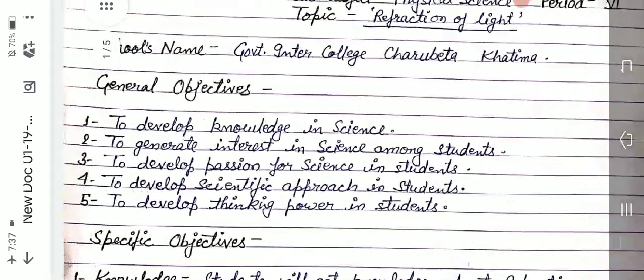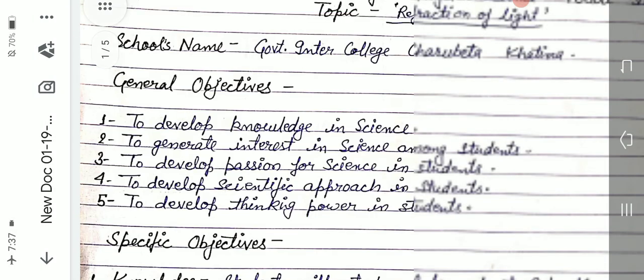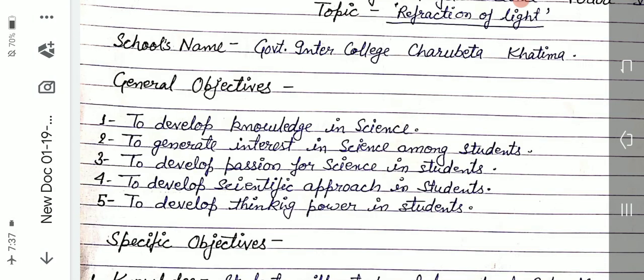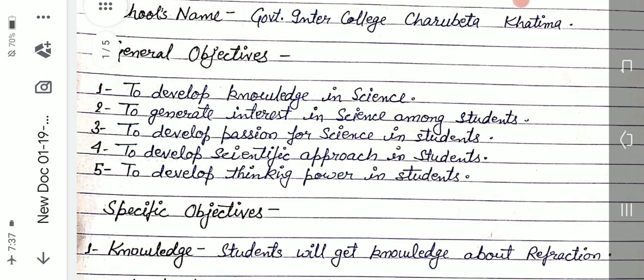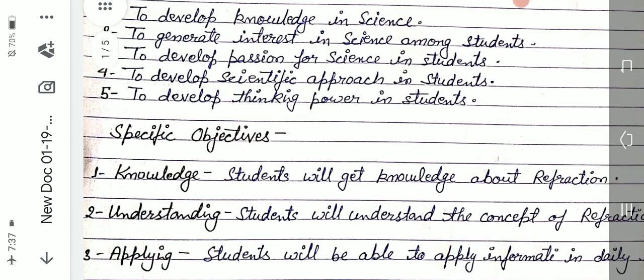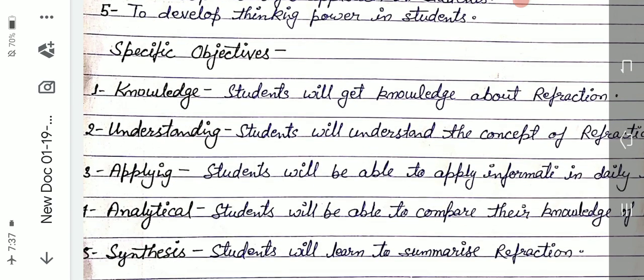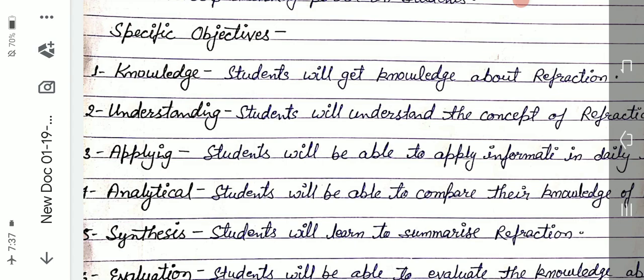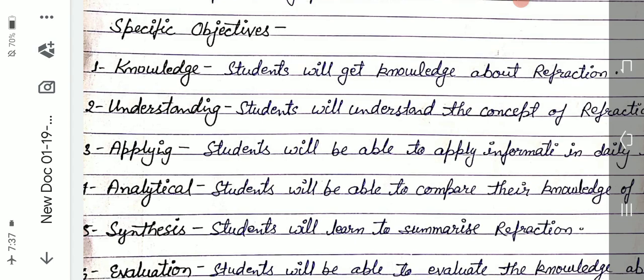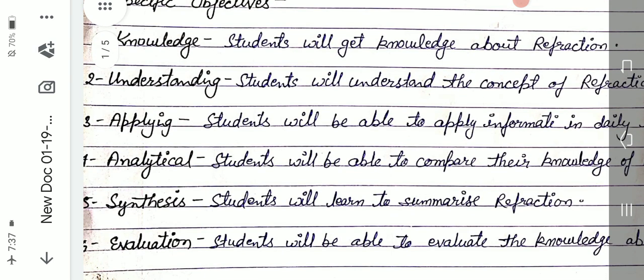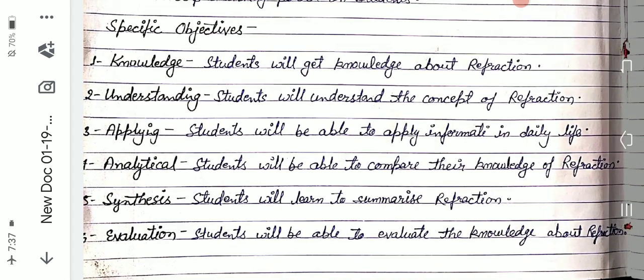After that we note specific objectives. Specific objectives have six points: first knowledge, second understanding, third applying, analytical, synthesis, and the last one is evaluation.